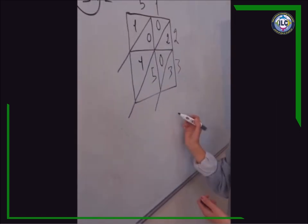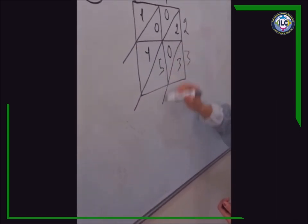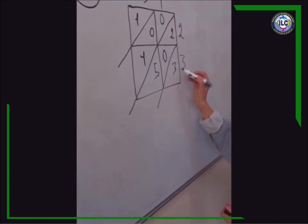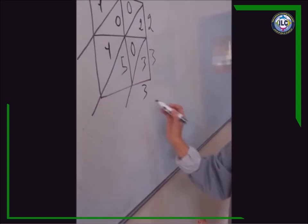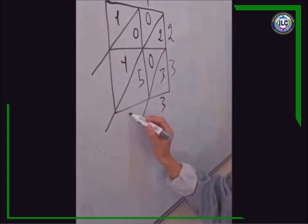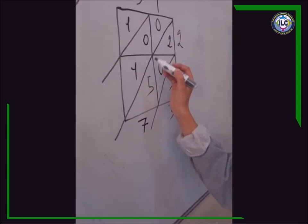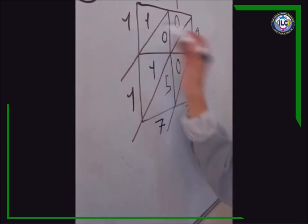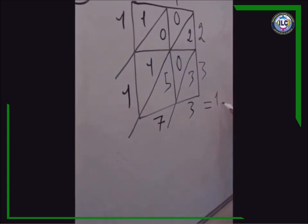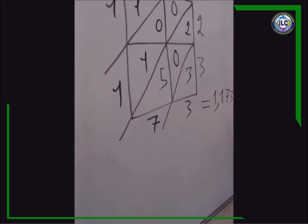Now I'm going to add the numbers in each separate line. 3, where there's nothing to add. 2 plus 5 is 7. 0 plus 1 is 1, and 1. So my answer is 1,173.